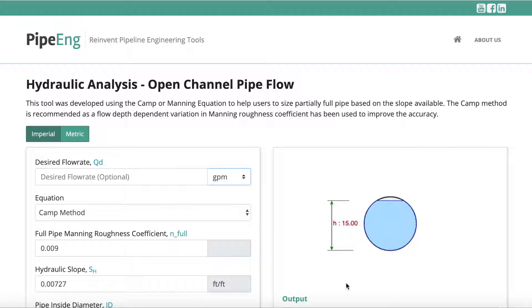For open channel flows, typically we use many equations to evaluate the hydraulic performance. In the 1960s, Mr. Tr Camp proposed a different method modified from many equations to improve the accuracy when it comes to open channel pipe. For this tool we offer both options, but we recommend the Camp method over Manning method because the Camp method has considered the flow depth and that will improve the calculation.